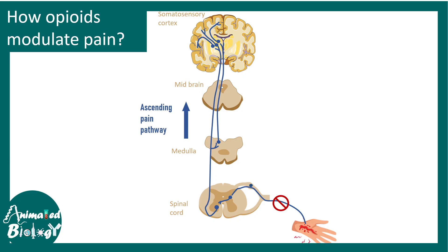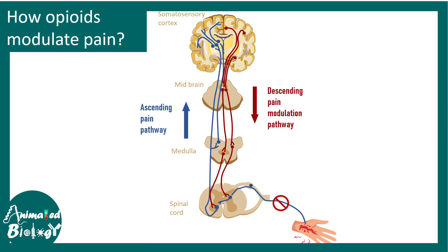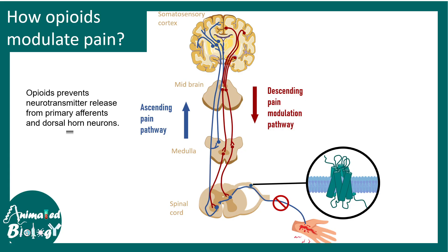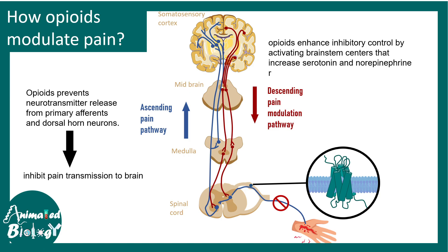In general, the body knows how to control sensations altogether. There is another pathway known as the descending pathway, which is a pain modulation pathway. Opioids actually activate this descending pathway, creating a strong block on the relay of pain signals to the brain. Overall, opioid receptors' job is to inhibit pain transmission to the brain, and by enhancing inhibitory control via the descending pathway, they act as strong analgesics.